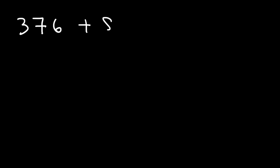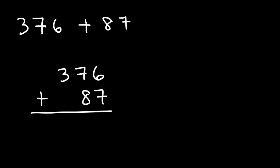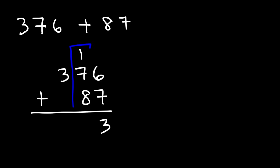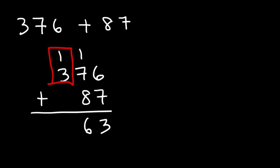Let's try another example: 376 plus 87. Let's line up everything first, then start by adding 6 plus 7, which is 13 — write the 3, carry the 1. Then 1 plus 7 is 8, and 8 plus 8 is 16 — write the 6, carry the 1. Finally, 1 plus 3 is 4. So the final answer is 463.